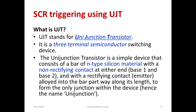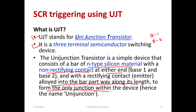The full form of UJT is unijunction transistor. It has three terminals. The UJT is a simple device that comprises of a bar of N-type silicon material with non-rectifying contact at either end — that is two bases: base 1 and base 2. And with a rectifying contact, allowed into the bar part along its length to form only one junction within the device. Hence, it is known as unijunction.